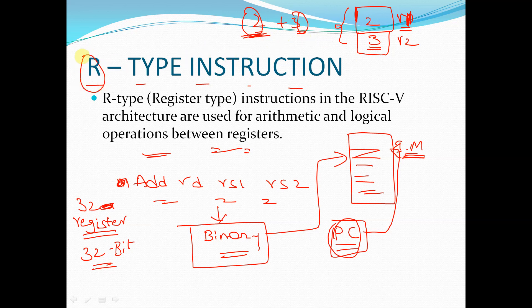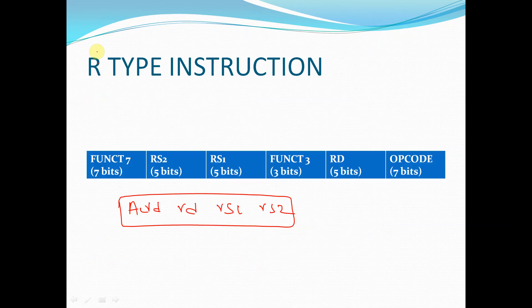In R-type instructions, the operation is always performed between values stored in registers — there is no direct operation on immediate values. The result — for example, 2 plus 3 equals 5 — is stored in another register called the destination register. Registers are used to hold the values.